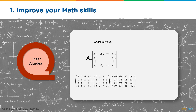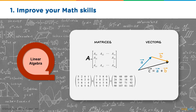Now let's look at linear algebra. Linear algebra has two main concepts: matrices and vectors, both used widely in machine learning. Matrices are used for image recognition, where the entire image is already in the form of a matrix. You need to be able to perform simple operations like addition, subtraction, multiplication, inverse, transpose, and so on.